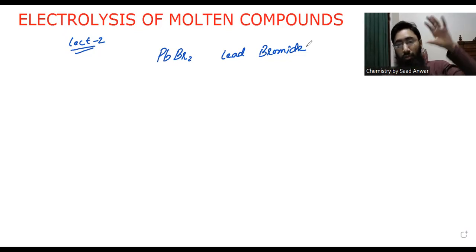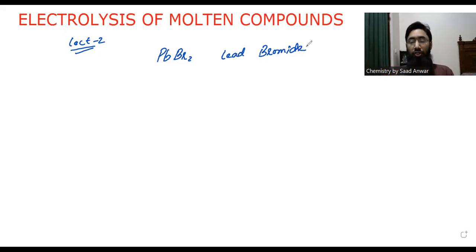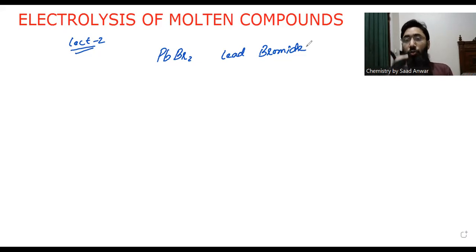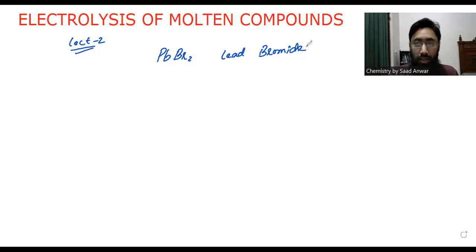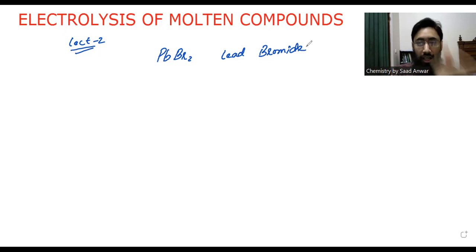When we do electrolysis of molten compounds, we get a different and predictable product. But in case of aqueous solution, it's quite tricky to predict which product will form at the anode and which product will form at the cathode. In case of molten compounds, it's very simple and very easy to predict which product will form at the cathode and which product will form at the anode.